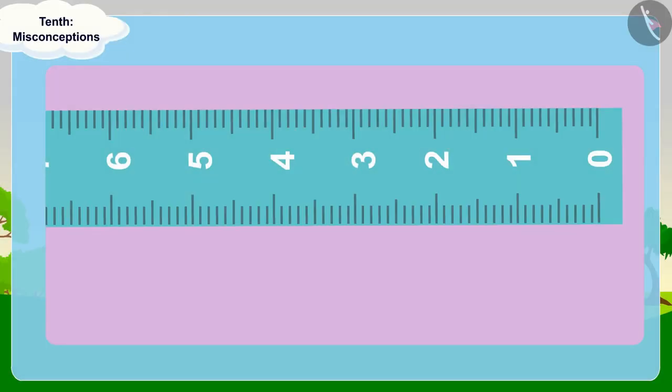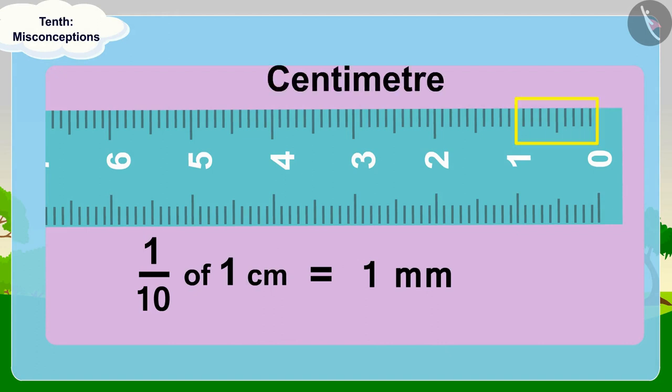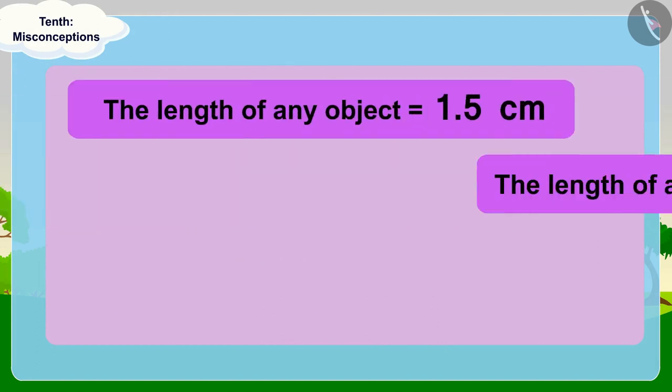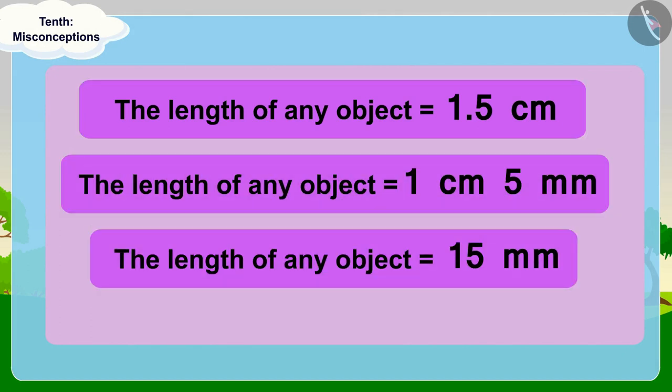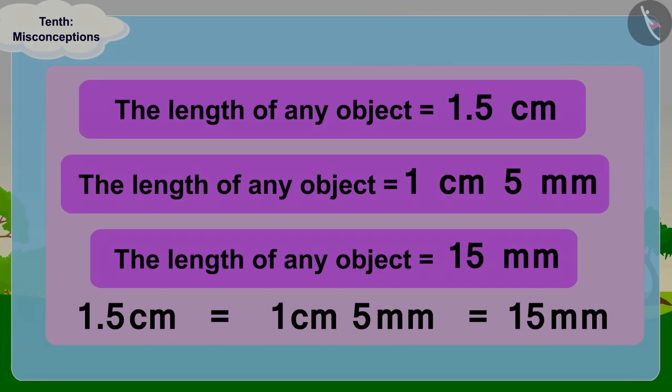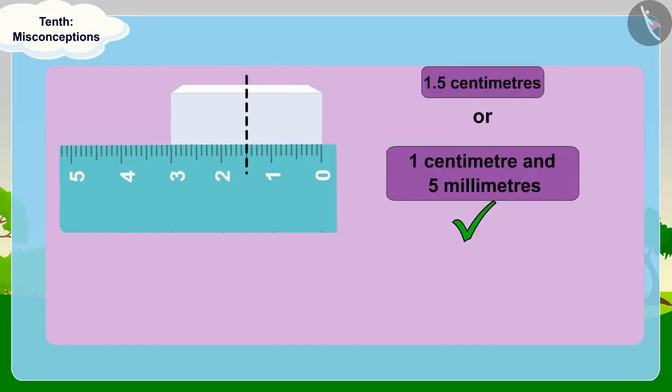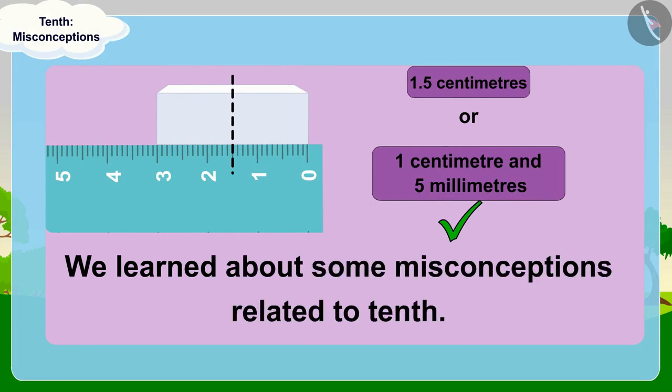Children, because a millimeter is one tenth of a centimeter, we can write the length of any object in these three ways and it is exactly the same. In this video we learned about some misconceptions related to tenths.